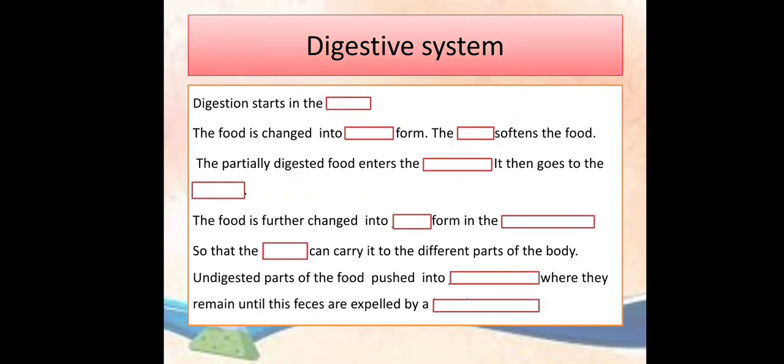The passage is: Digestion starts in the dash. The food is changed into dash form. The dash softens the food. The partially digested food enters the dash. It then goes to the dash. The food is further changed into dash form in the dash so that the dash can carry it to the different parts of the body. Undigested parts of the food push into dash where they remain until the species are expelled by a dash.